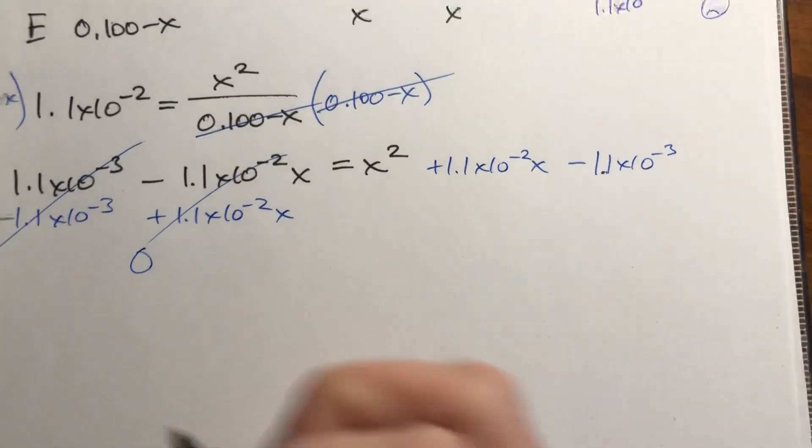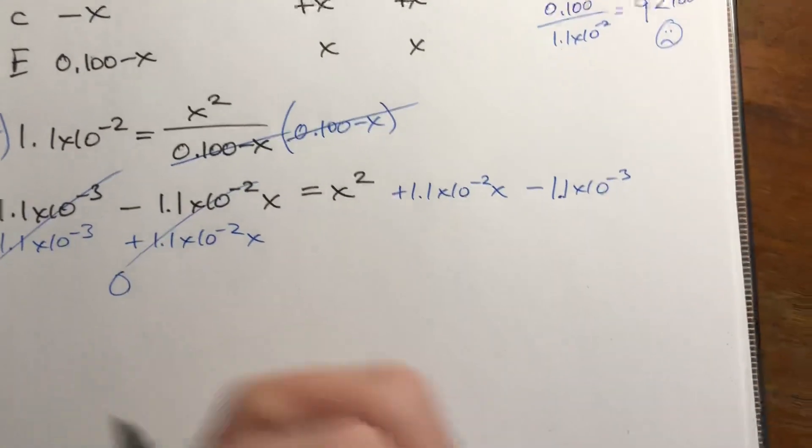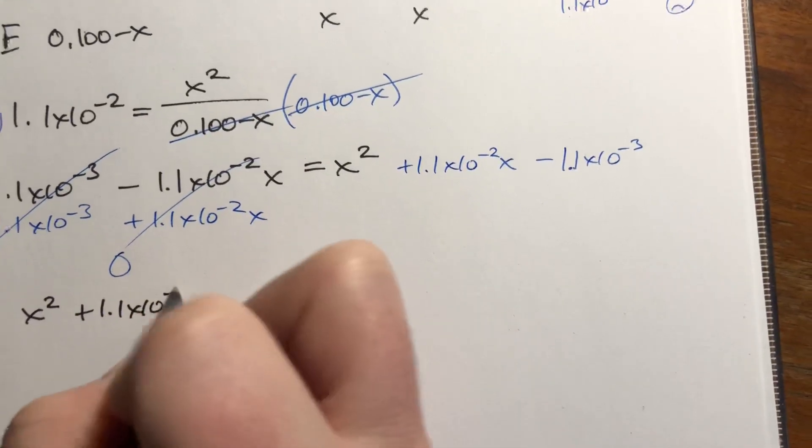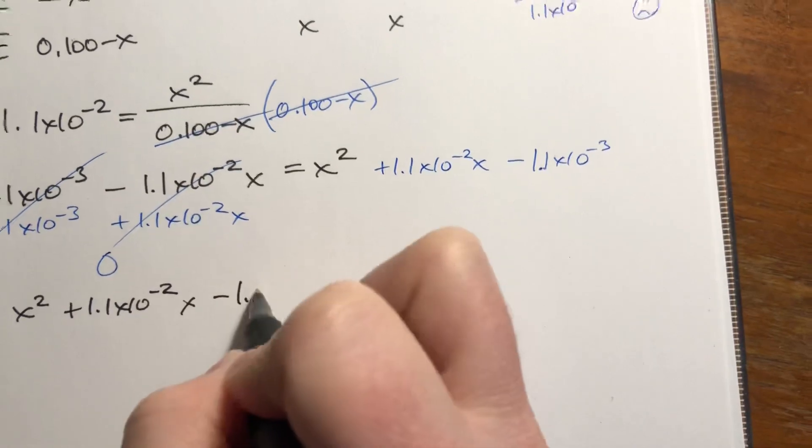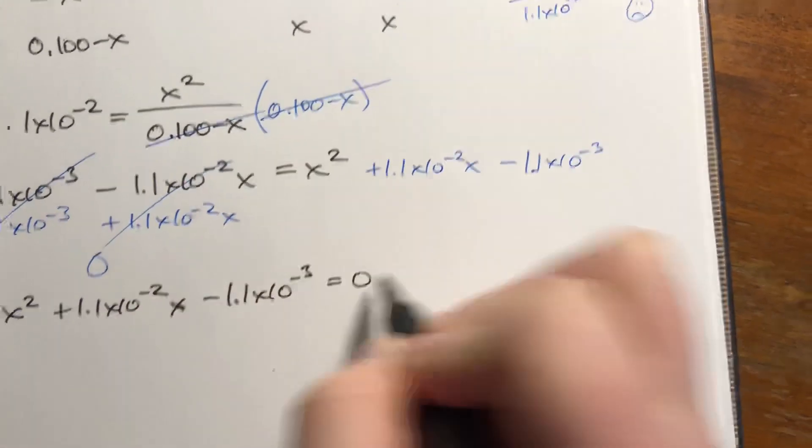I'm going to rewrite it just to make it look clear, but I'm going to switch sides to make it look more like what we're used to seeing for the quadratic. But x squared plus 1.1 times 10 to the negative second x minus 1.1 times 10 to the negative third is equal to 0.